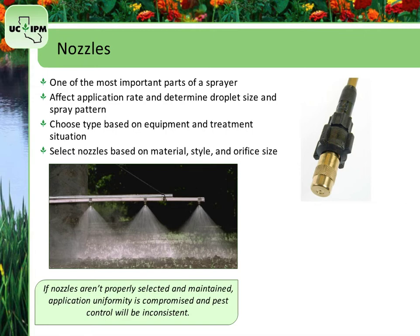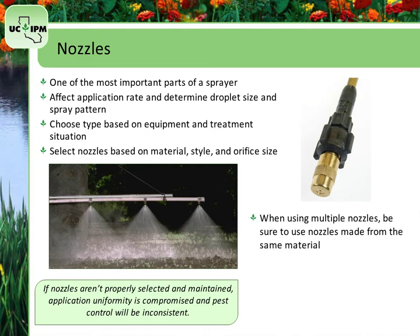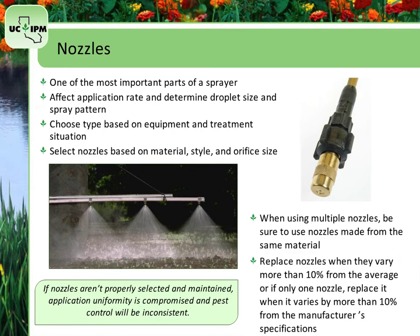All nozzles are subject to wear, regardless of the type or material they are made from. To ensure uniform wear when using multiple nozzles on a single piece of equipment, be sure they are all made from the same material. The nozzle design, the pesticide being applied, and the pressure at which the pesticide is applied all contribute to the deterioration of a nozzle. As a nozzle wears, the volume and pattern of its spray changes and affects the quality of application. Replace nozzles when they vary from each other by more than 10%. If you are using a wand that only has one nozzle, replace it when it varies by more than 10% from the manufacturer's specs.